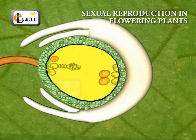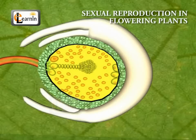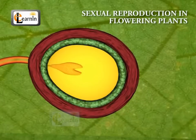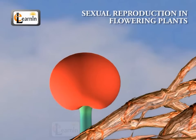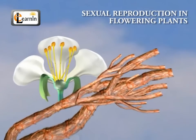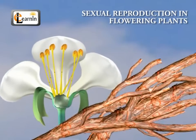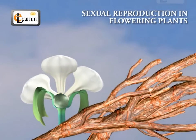After fertilization, the zygote divides several times to form an embryo within the ovule. The ovule develops a tough coat and is gradually converted into a seed. The ovary grows rapidly and ripens to form a fruit. Meanwhile, the petals, sepals, stamens, style, and stigma may shrivel and fall off.